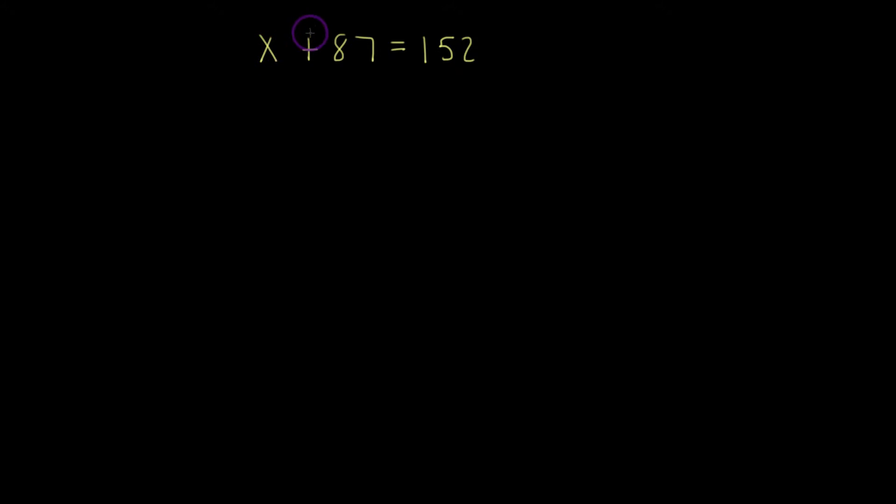The way to do that is I have to get rid of adding 87. So how do you undo addition? You're going to use subtraction. It's the opposite, or the inverse. So what's the opposite of adding 87, or the inverse of adding 87?